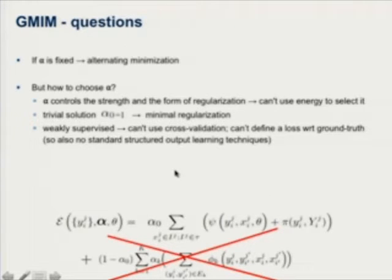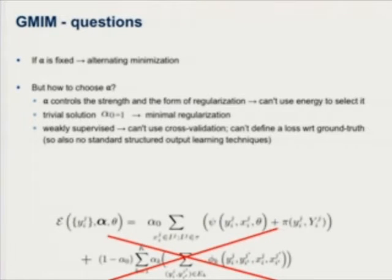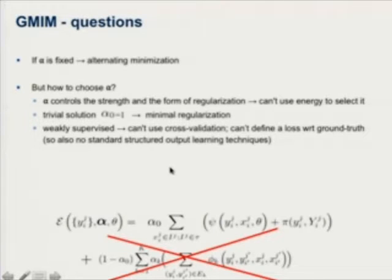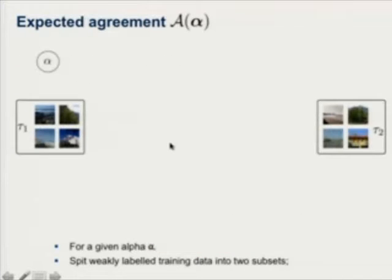The second barrier is that you cannot do standard cross-validation or structured output learning with structured SVMs, because you cannot even define a loss on this problem. There is no pixel-level ground truth training data, so you cannot do traditional structural output learning or define a loss between labelings. We need something else to set those weights without ground truth.